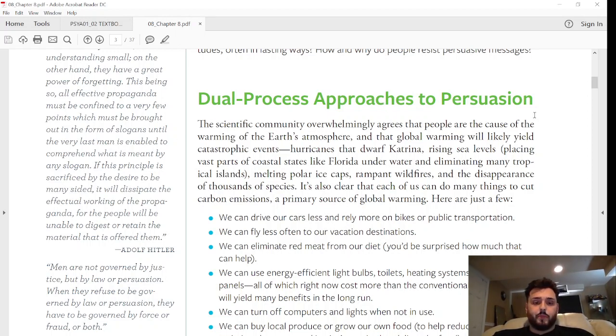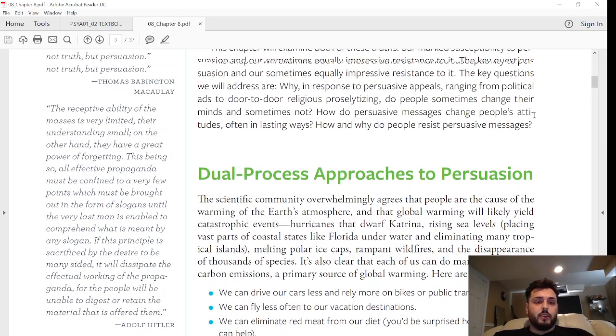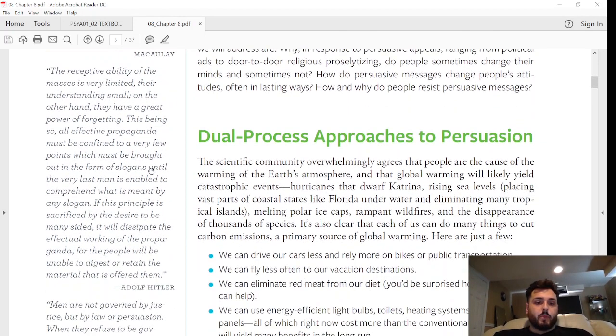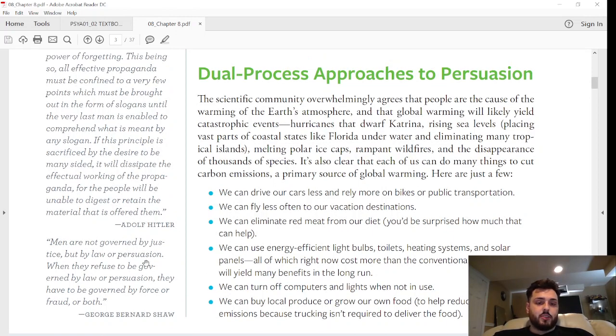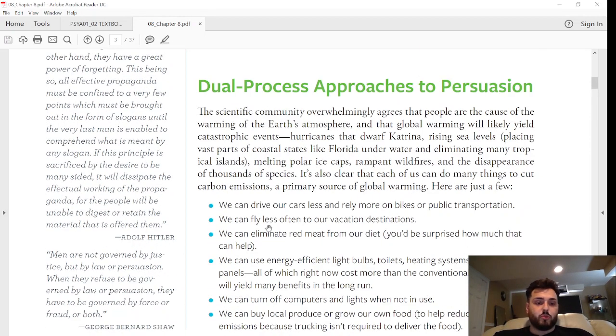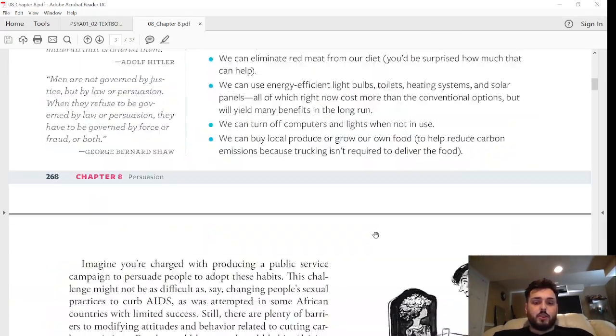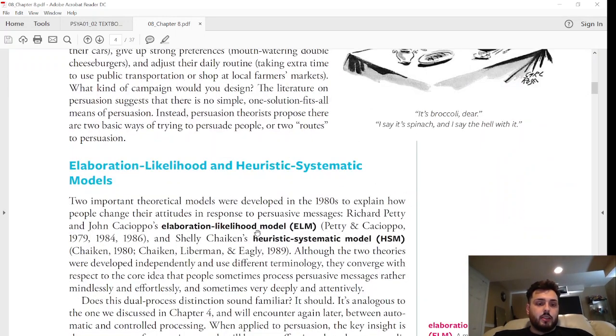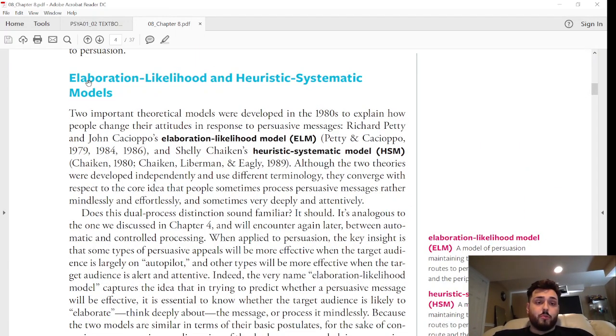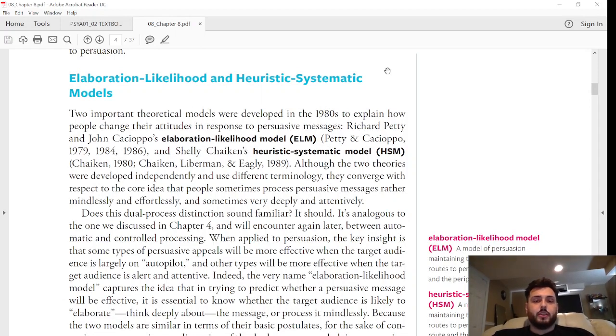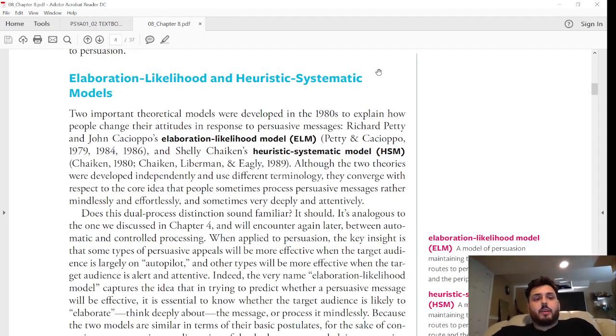There are two kinds of models that we'll look at for persuasion and how people are persuaded. They'll look at examples like right here, it just says Adolf Hitler and his way of persuasion, George Bernard Shaw, and many other examples that are featured in the chapter. So these are the two models: the elaboration likelihood and heuristic systematic models.